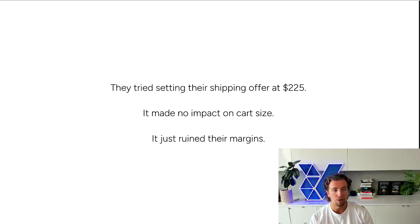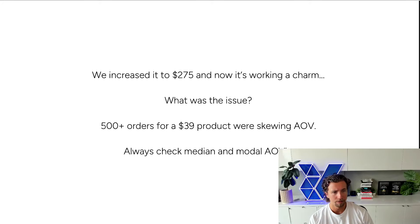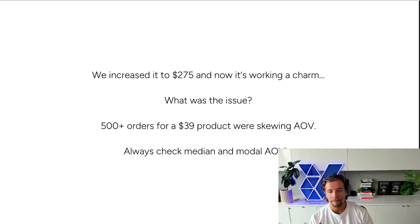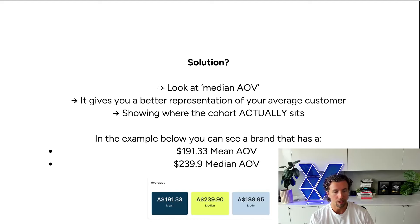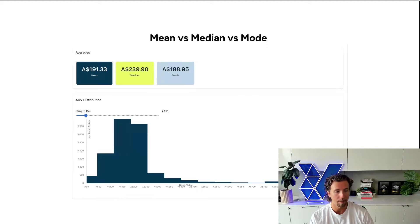They initially tried setting their shipping offer at $225 — it made absolutely no impact on cart size and just destroyed their margins. We increased the threshold up to $275, and it's now working. The reason is that they had 500-plus orders for a $39 product, which was skewing the mean AOV significantly downwards. But if you check median and mode, you'd realize the threshold should have been set much higher. The median generally isn't impacted as much by external outliers.